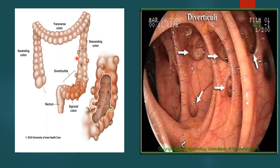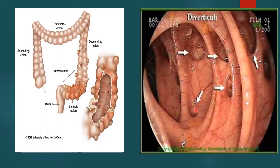This is an endoscopic picture of diverticular disease. Diverticula occur on the left side of the colon — the sigmoid is the most common site, together with the descending colon, accounting for more than two-thirds of diverticular disease. Here a colonoscopy picture shows multiple openings of the mouths of the diverticula. The bleeding occurs within the diverticulum, in the dome of the diverticulum.